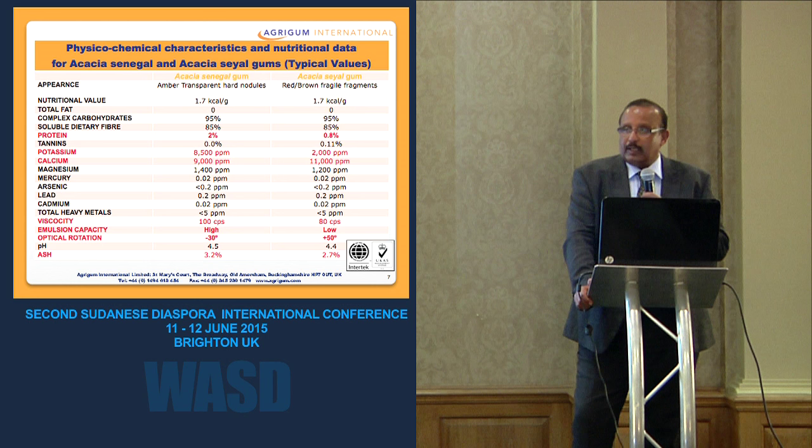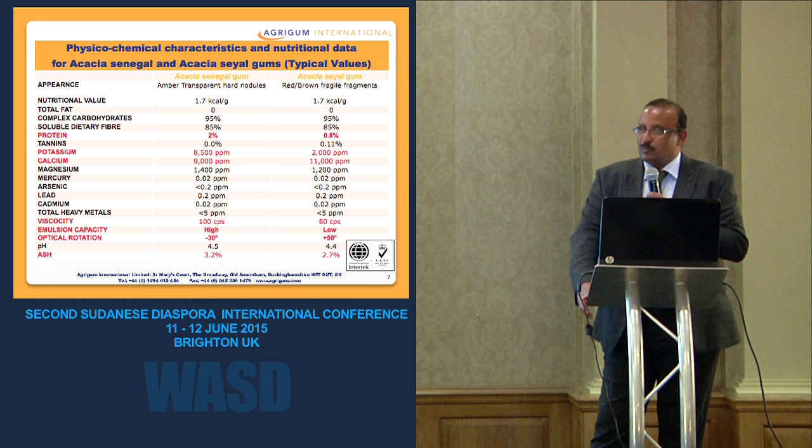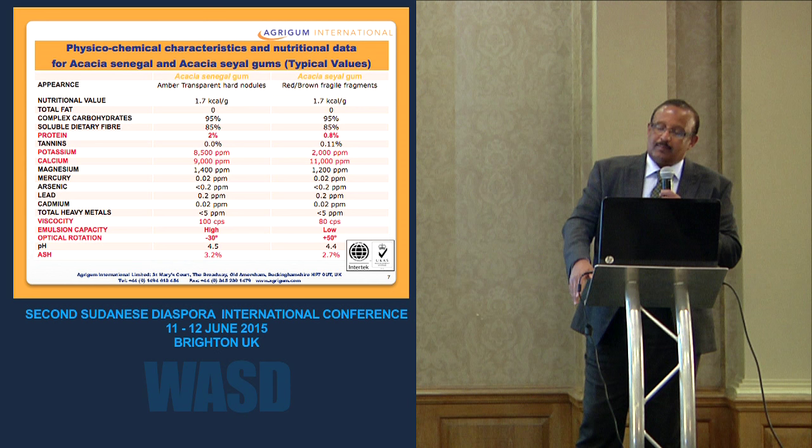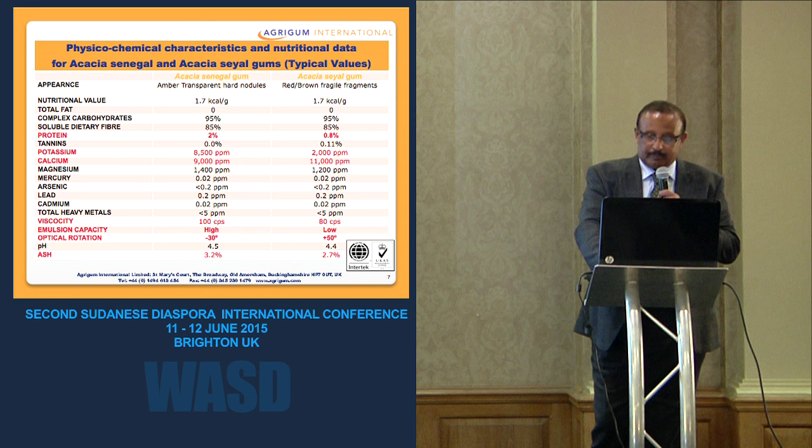One quality control tool used to assess the purity of the species is optical rotation, measured with a polarimeter. The typical value for Senegal gum is about minus 30, and for Talha it is positive 50 — so they are totally different.